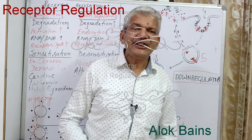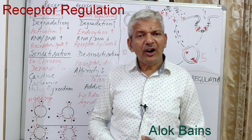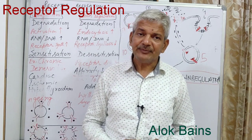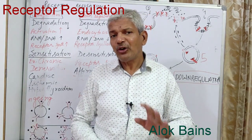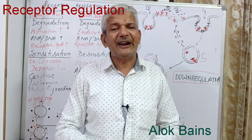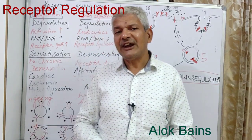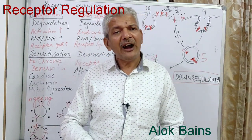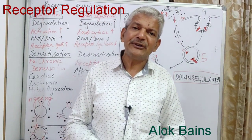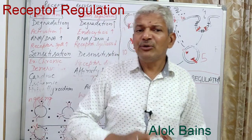Today's topic is receptor regulation. There are various drugs that cause addiction, tolerance, withdrawal syndrome, or are habit-forming in nature. Why do these drugs have such pharmacological properties? How do these drugs develop such pharmacological properties? All of this can be explained by studying receptor regulation, and we will try to find out how and why these drugs are addictive or habit-forming, or produce tolerance.